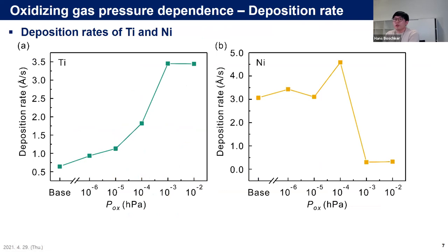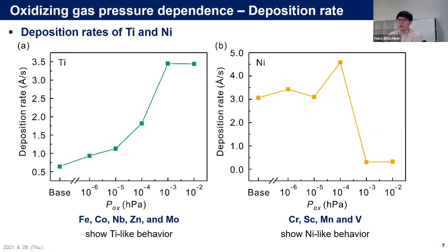At higher pressure like 10^-2 hectopascal, amorphous oxide film formed due to thermal energy loss of vapor species. This is also reflected in substrate temperature drop. The oxidizing gas pressure affects the deposition rate of elements. This shows the deposition rate of titanium and nickel depending on oxidizing gas pressure. These two elements show quite different tendencies. Deposition rate of titanium increases as oxidizing gas pressure increases, but certainly decreases as pressure increases over 10^-3 hectopascal. Indeed, these are the two representative tendencies we observed. Iron, cobalt, niobium, zinc, molybdenum show titanium-like behavior. Chromium, scandium, manganese, and vanadium show nickel-like behavior.